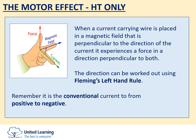Finally, for those doing higher tier, a quick recap on the motor effect. When a current-carrying wire is placed in a magnetic field such that the current is perpendicular to the direction of the magnetic field, that wire experiences a force. That force is perpendicular to both the magnetic field and the current. Using Fleming's left hand rule — aligning your fingers as shown in the diagram — you can work out which direction the force will be based on the direction of the magnetic field and the direction of the current.